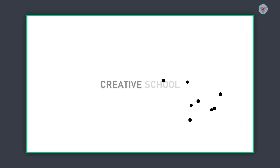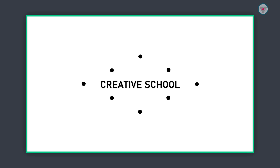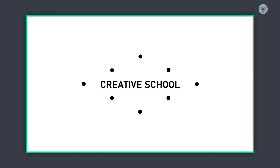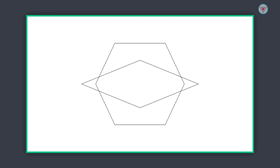Before starting this tutorial, I want to explain the summary and procedure of how I will create this flying dots animation in PowerPoint. First, we need to take a hexagon shape and a diamond shape. Then we need to take 8 oval shapes and determine their position at the corners of the hexagon shape.